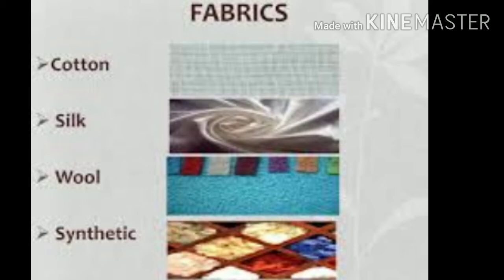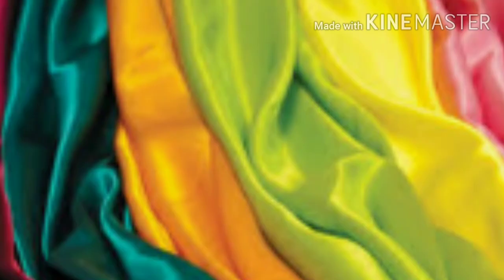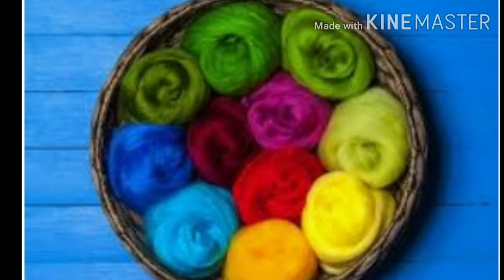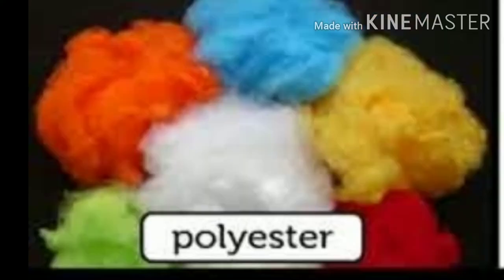Now we discuss our first point: Variety in Fabrics. Students, collect some cuttings of fabrics, feel and touch each piece of fabric. Now try to label some of the fabrics as cotton, silk, wool, or synthetic fabric like rayon, nylon, polyester, or acrylic.